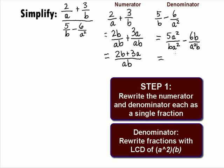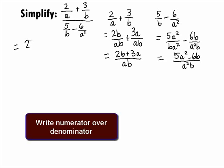Now that we have a least common denominator, we can combine them to be one fraction of 5a squared minus 6b all over a squared b. We can put this back into the complex fraction and when we do this, we get, in the numerator, 2b plus 3a over ab, all over the denominator of 5a squared minus 6b over a squared b.